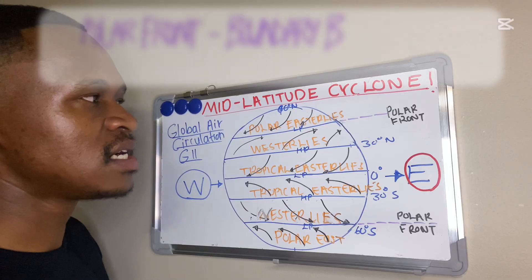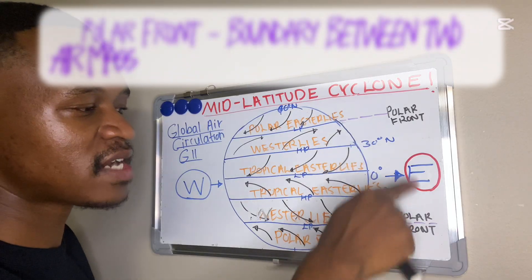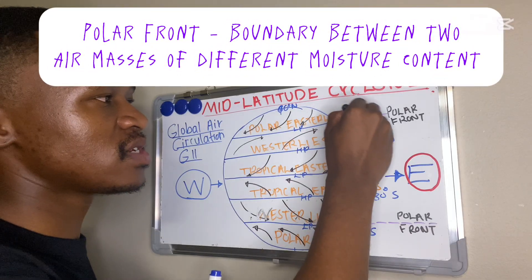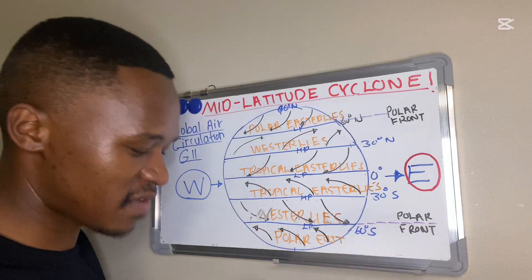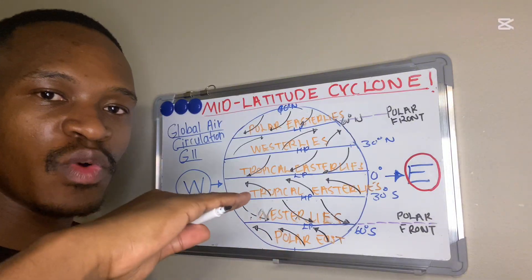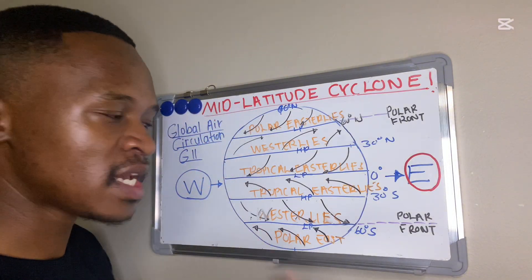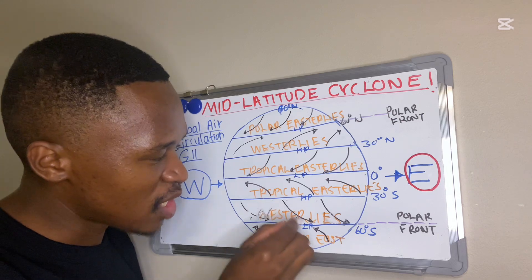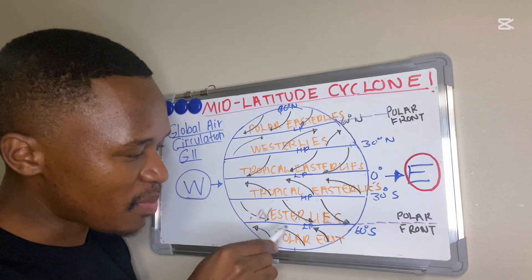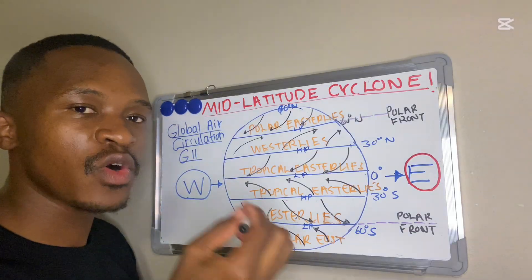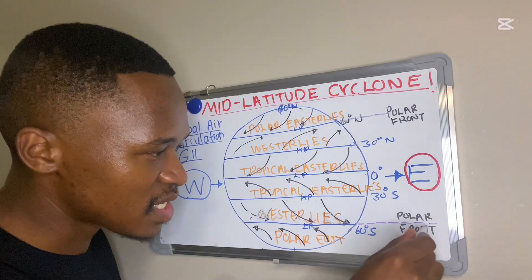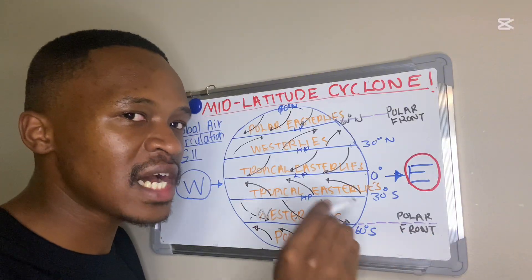Another important thing to note is the position of our polar front at 60 degrees north and 60 degrees south. A polar front is a boundary between two air masses of different moisture content. Our westerlies bring warm, moist air from the equator, while our polar easterlies bring cold, dry air from the poles. Where they meet at 60 degrees is our polar front.